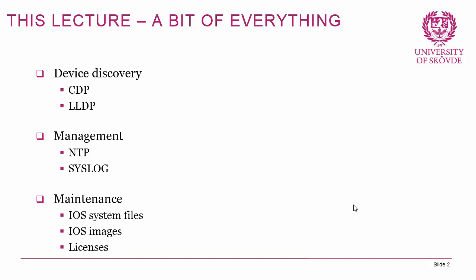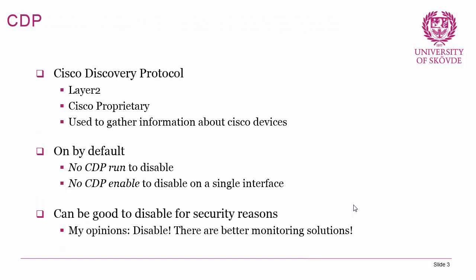We're going to dig into the Cisco Discovery Protocol, CDP. CDP is a layer 2 protocol that is Cisco proprietary and is used to gather information about devices. A CDP-enabled device will send out information about itself on all interfaces — it's on by default. You can use 'show CDP neighbors' to get information about your neighbors, and disable it with 'no CDP run' in global configuration mode, or 'no CDP enable' on a single interface.